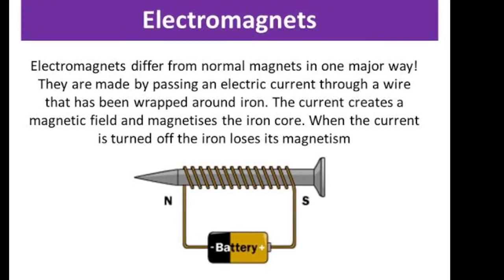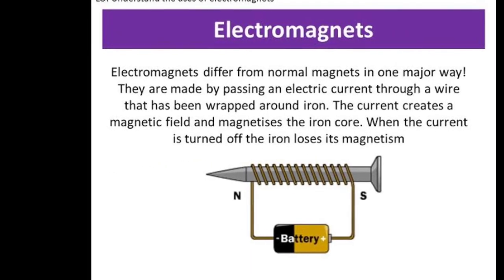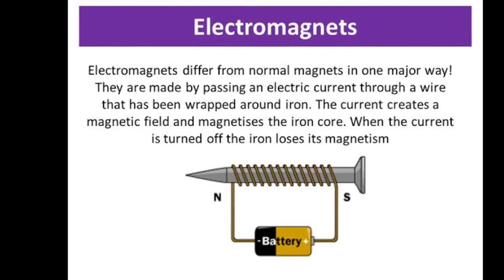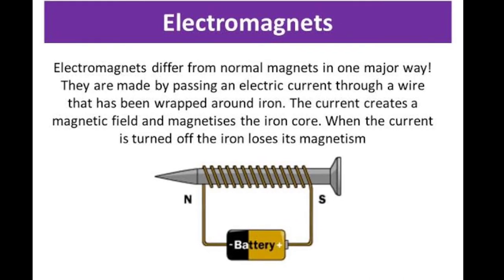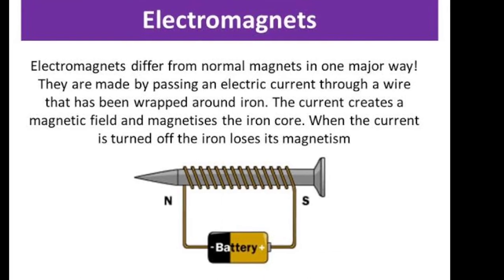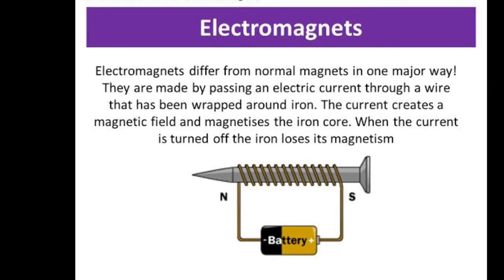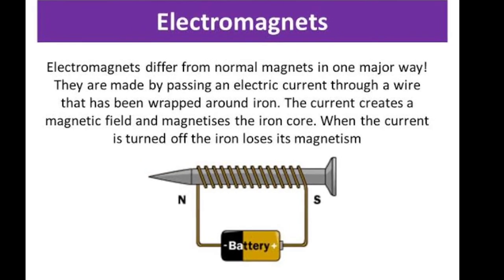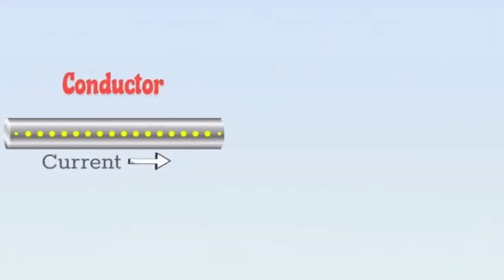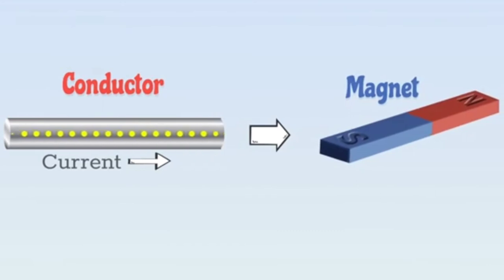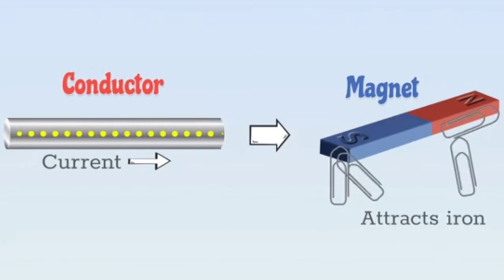The main advantage of electromagnets over normal magnets is that they can easily start and stop, and the strength of the magnetic field can be effectively controlled. When current flows through the circuit or the conductor, it behaves as a magnet. And magnets have a very important property that they attract iron. Does the conductor carrying current also attract iron? Let us find it through an activity.